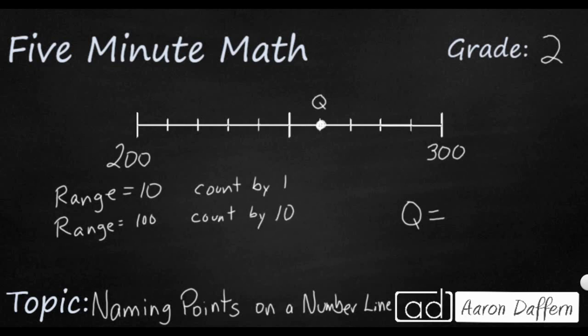But look, if we count by tens we can get what we need to. So you don't always count by ones. You count by ones if the two boundary numbers are 10 apart, but now they're 100 apart.